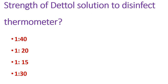Next question: the strength of Dettol solution for disinfecting the thermometer. The options are 1:40, 1:20, 1:50, and 1:30. The right answer is 1:40 for both Dettol solution and Lysol solution. If using Savlon solution to disinfect the thermometer, we need to use the concentration of 1:20.